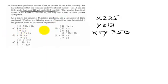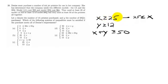Notice that all of the answer choices have the variables on the other side. So let's flip them around. This is going to be 25 less than or equal to X. All you do is flip them around — if you bring the X to the right-hand side, you also flip the direction of the inequality. Make sure the inequality is pointing to the same thing. Originally it was pointing to 25, and now it's pointing the other direction, but still to the 25.